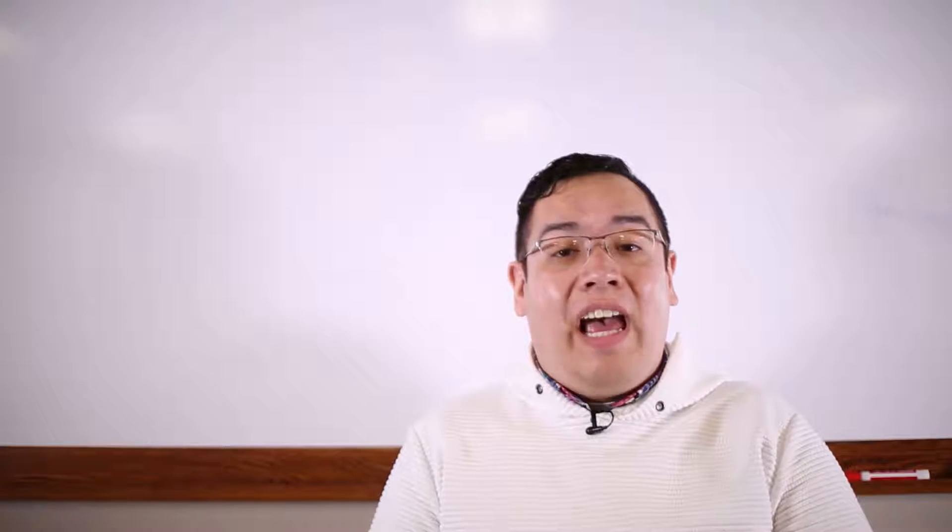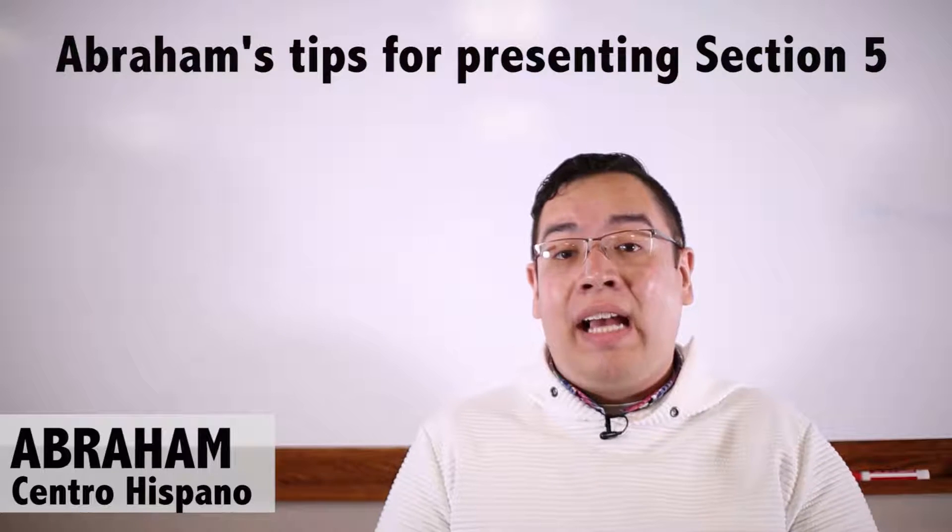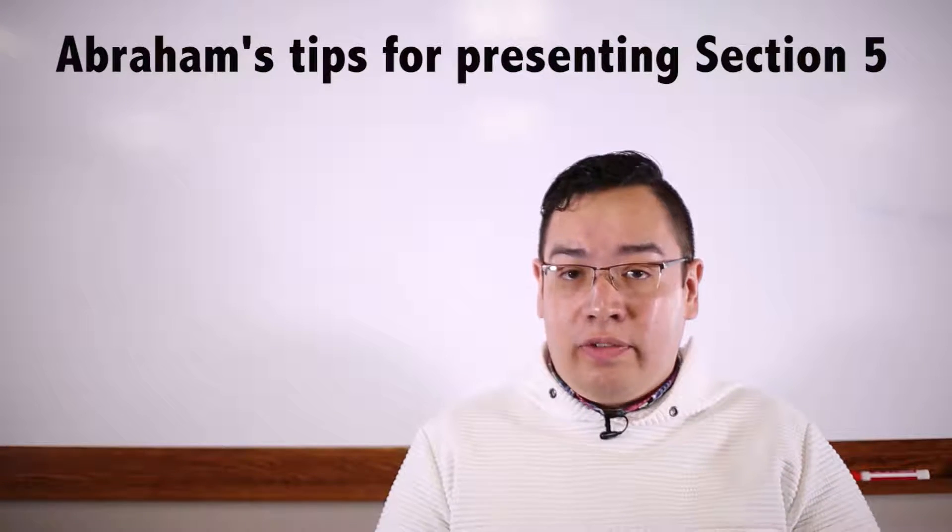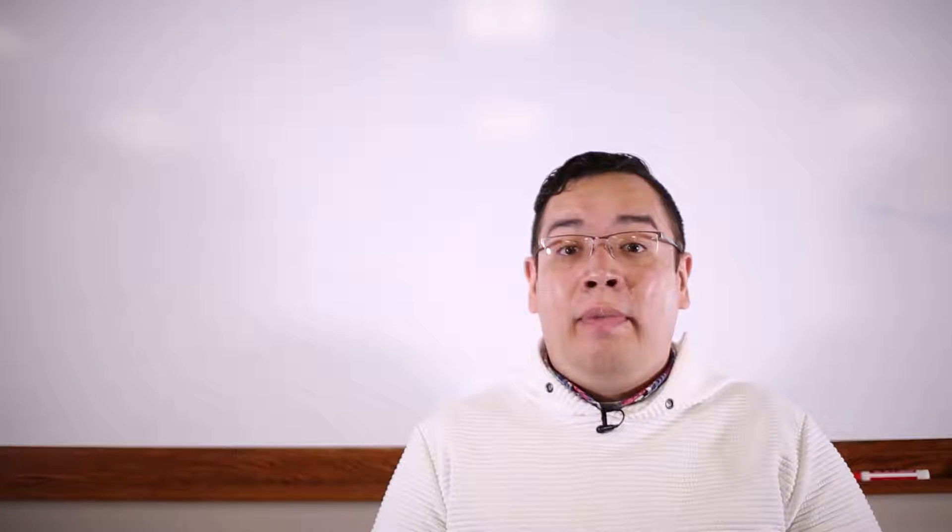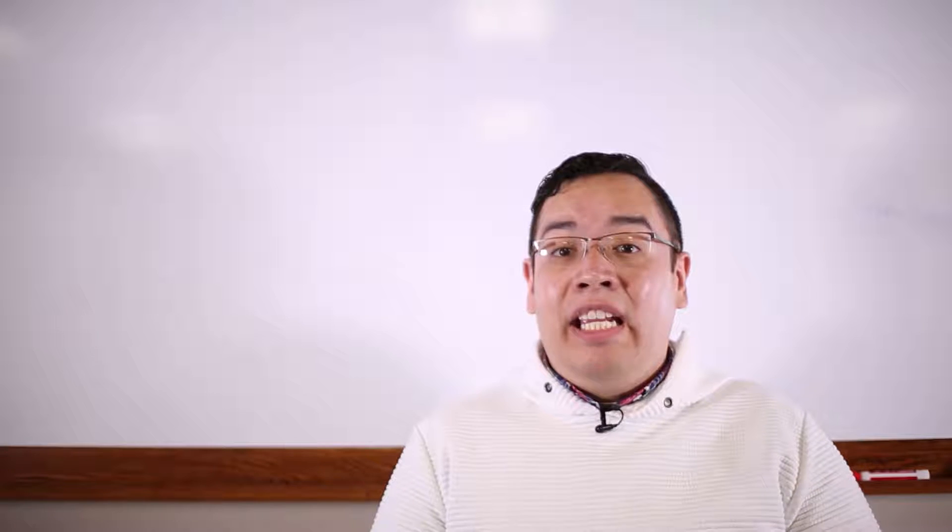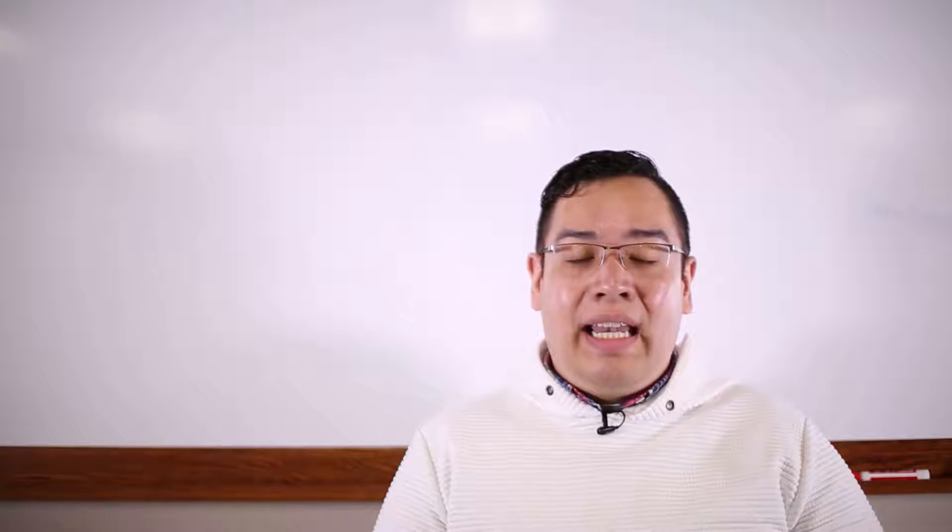We're talking about session five now. In session four, we gave students tips on what to do if their friend is in an abusive relationship, giving them empowering tools so they don't feel like they can't do anything. In session five, we hear the story of Elijah and Zoe.